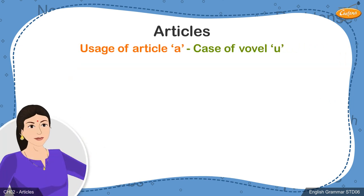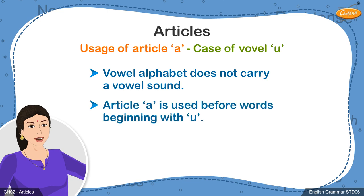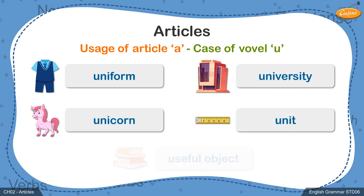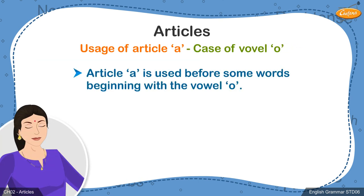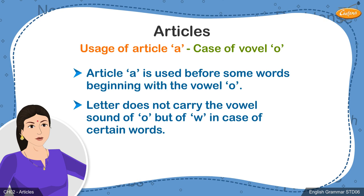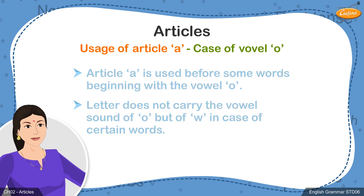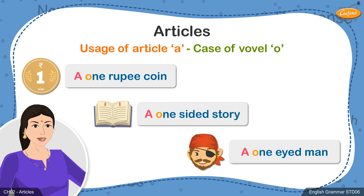In some cases, like the vowel u carries its own sound, but this sound is not a vowel sound. Therefore, in case of words starting with the letter u, the article a is used. Words like uniform, university, unicorn, unit, and useful object all begin with the vowel u, however, the article a is used before each of these words. The article a is also used before words beginning with the letter o since this alphabet carries the consonant sound of 'w' and not the vowel sound. In words like one rupee coin, one-sided story, one-eyed man, article a is used.